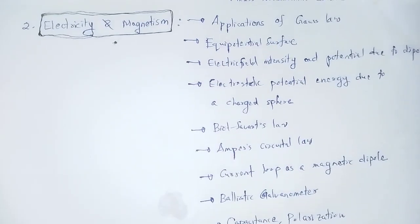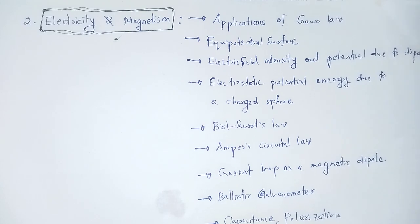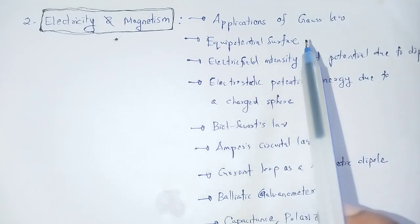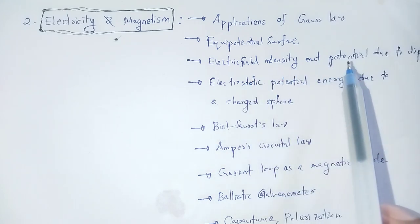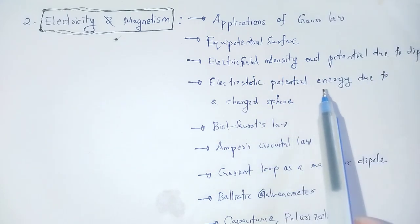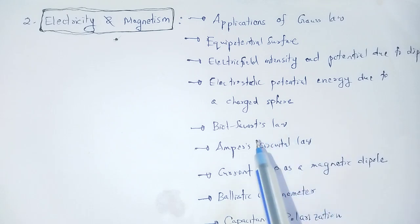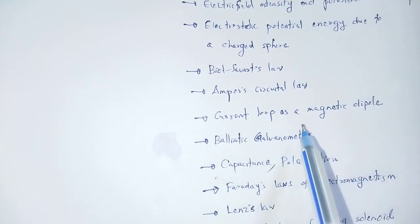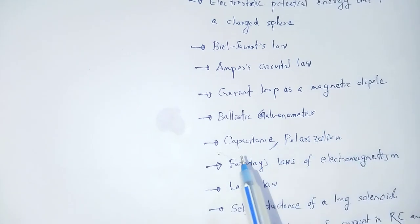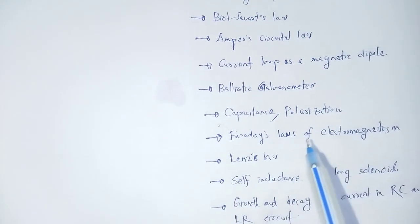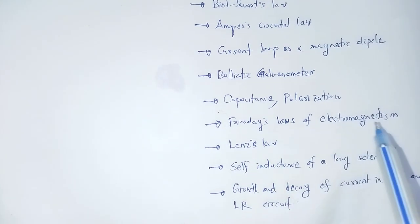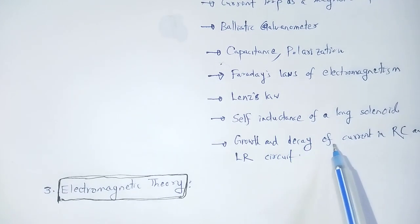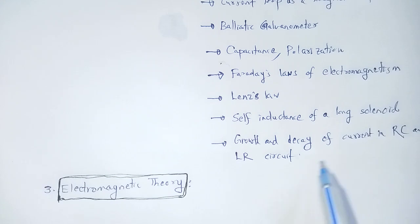Electricity and Magnetism core paper important topics summary: Ampere's circuits, applications of Gauss's law, equipotential surface, electrical intensity and potential due to dipole, electrostatic potential energy due to a charged sphere, Biot-Savart's law, Ampere circuits, current loop as a magnetic dipole, ballistic galvanometer, capacitance, polarization, Faraday's law of electromagnetism, Lenz's law, self-inductance of a long solenoid, growth and decay of current in RC and LR circuits.